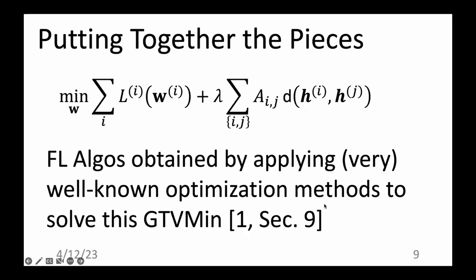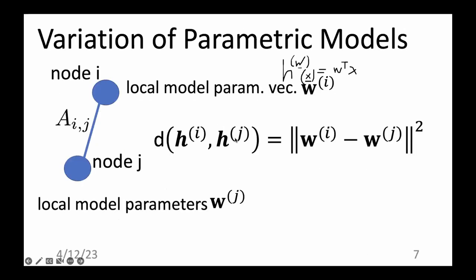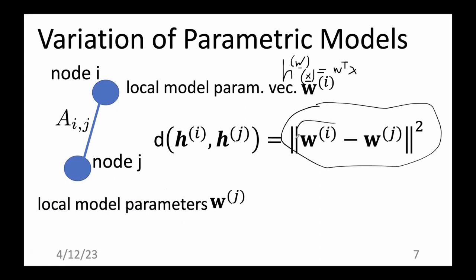If we add this discrepancy term to the local loss functions we obtain a function that can be minimized by gradient descent. In particular, this squared norm discrepancy has the advantage of being a differentiable function of the individual weights or parameter vectors. If you use just the norm without squaring, you lose the nice property of differentiability and cannot use straightforward gradient descent anymore.